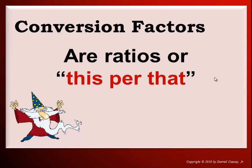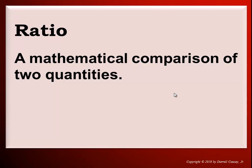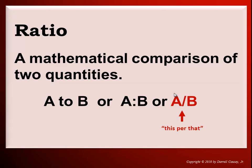Conversion factors are ratios or this per that problems. So ratios are factors and they're this per that, like feet per inches. One foot equals 12 inches per 12 inches. So we want to remember the this per that. Ratio is a mathematical comparison of two quantities, like A to B, and notice that's the this per that.